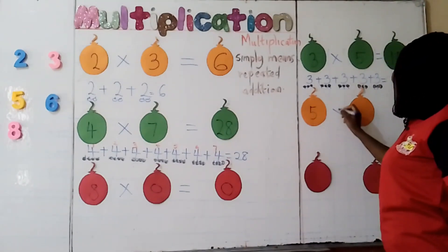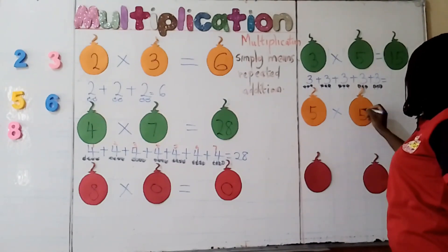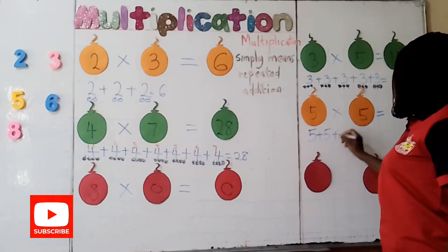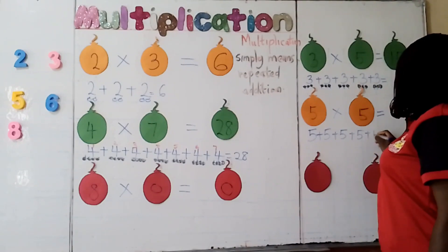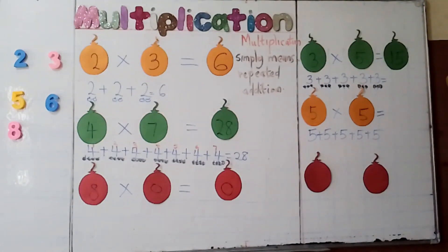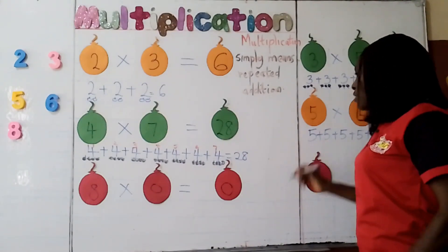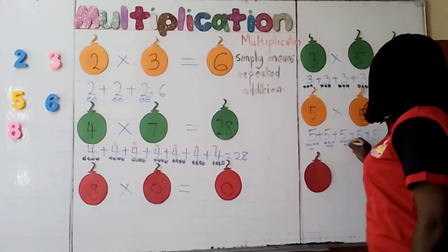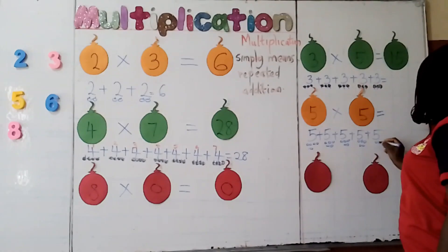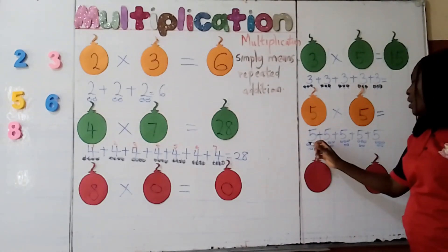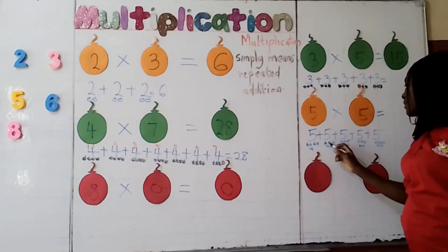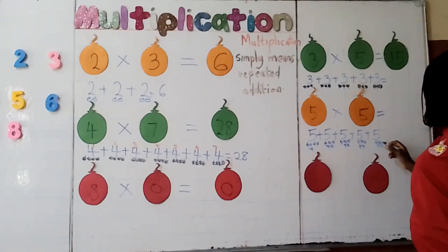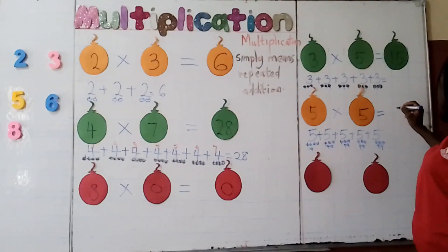5 times 5 — what would be my answer? That means I should go 5 in 5 places: 1, 2, 3, 4, 5 — five times. I use my counter: 1, 2, 3, 4, 5 — 1, 2, 3, 4, 5 — 1, 2, 3, 4, 5 — 1, 2, 3, 4, 5 — 1, 2, 3, 4, 5. Add the counters together: 1, 2, 3, 4, 5, 6, 7, 8, 9, 10, 11, 12, 13, 14, 15, 16, 17, 18, 19, 20, 21, 22, 23, 24, 25. So 5 times 5 is actually 25.